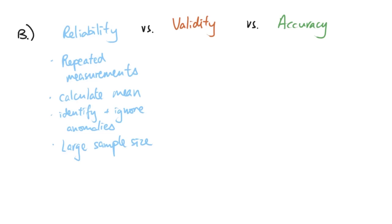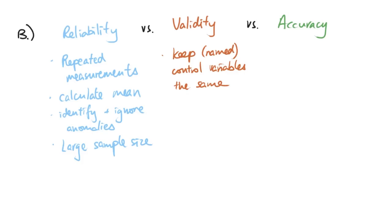To improve validity, similar to the concept of control variables, it's very much about standardization. You need to include control variables and state that you're going to keep them the same — for example, same concentration, same length, same mass, etc. These are usually two-mark questions, so if you can name two control variables you're keeping the same, that's essentially two marks.